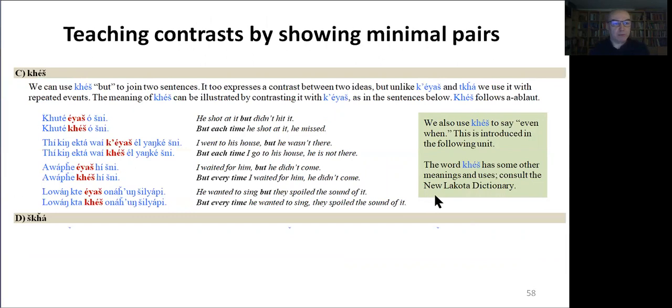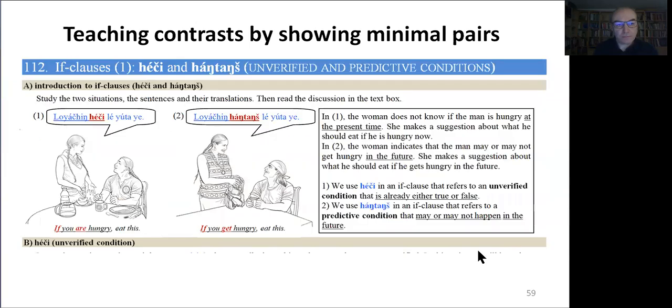Another example of teaching through minimal pairs is with the introduction of the word kesh. We can use kesh but to join two sentences. It too expresses a contrast between two ideas, but unlike eash and kha, those are words introduced in the previous sections, we use it with repeated events. So if they study a minimal pair they will observe that eash is used with a single event whereas kesh is used with repeated or habitual events.